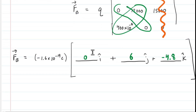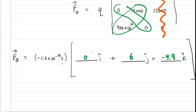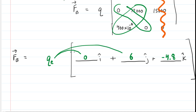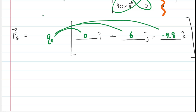Don't forget there is still the charge q on the outside that we need to distribute. For simplicity, I'll call it q_e, representing the charge on an electron. We'll see later that we won't actually need to fill in the numerical value. Distributing q_e into the brackets, we can rewrite the magnetic force as: zero i-hat plus 6·q_e j-hat minus 4.8·q_e k-hat.